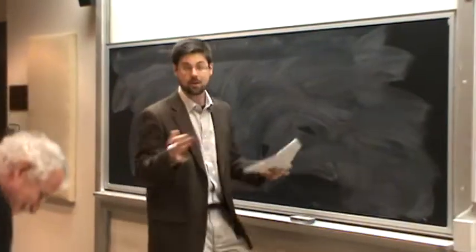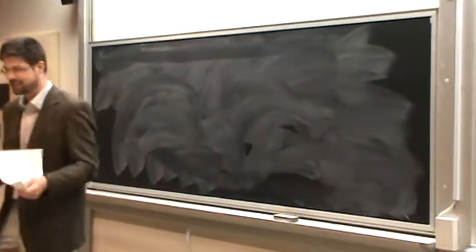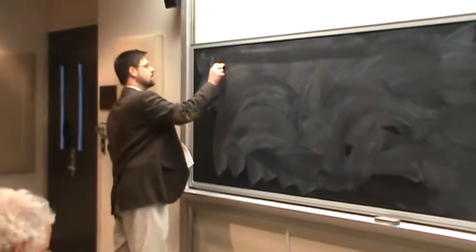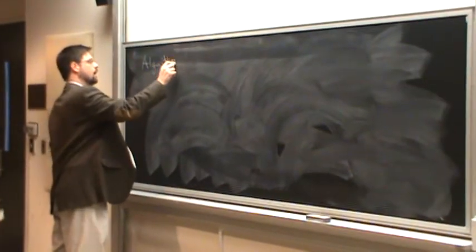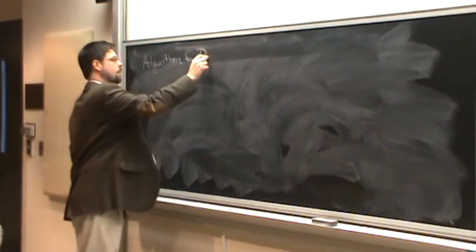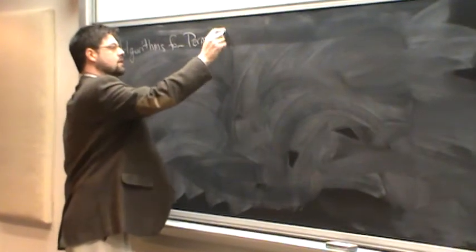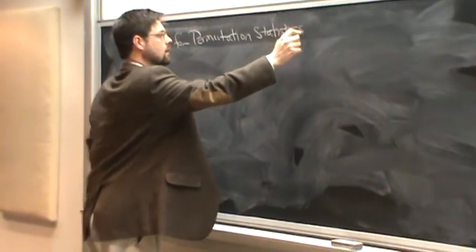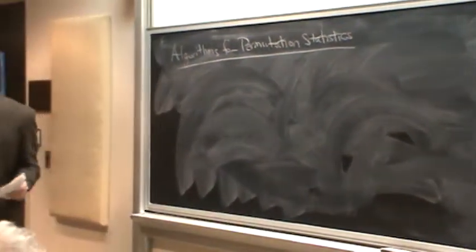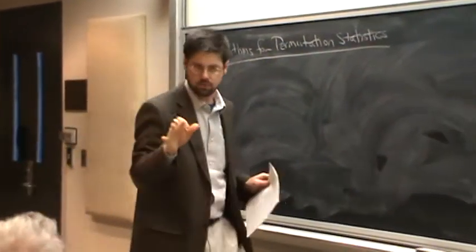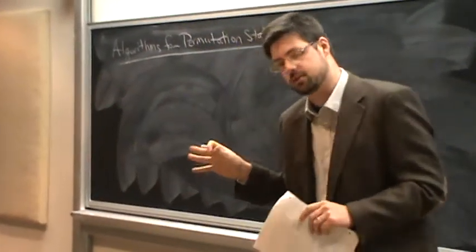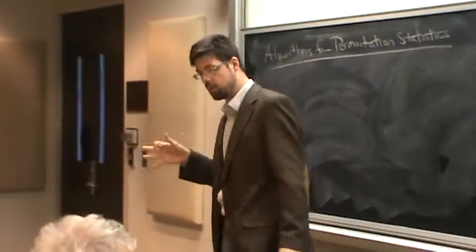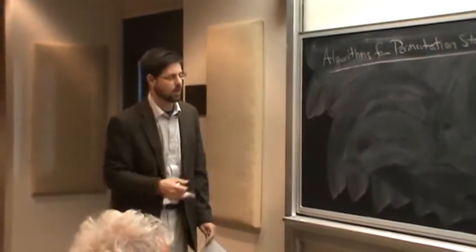Well, thank you all for coming to my PhD defense. It's nice to see friendly faces. So my thesis title: Algorithms for Permutation Statistics. The objects that we're looking at are permutations. We're looking at nice algebraic objects as combinatorial objects. We're using one line notation, the numbers 1 through n, no repeats in some order.